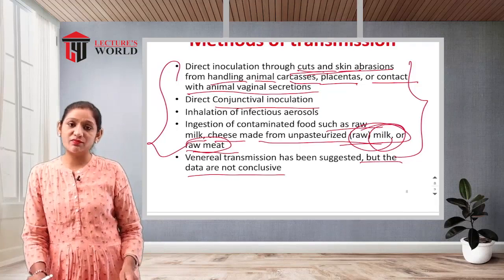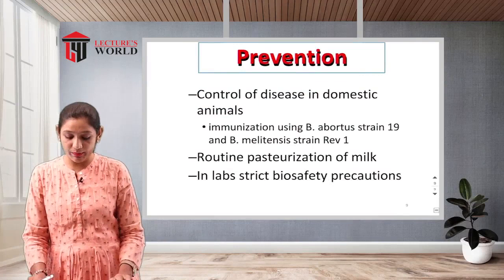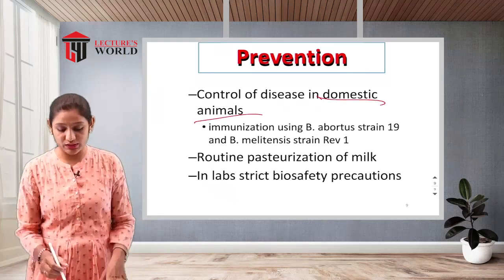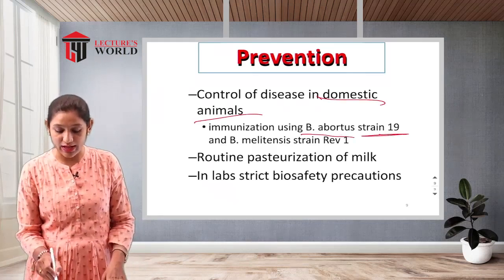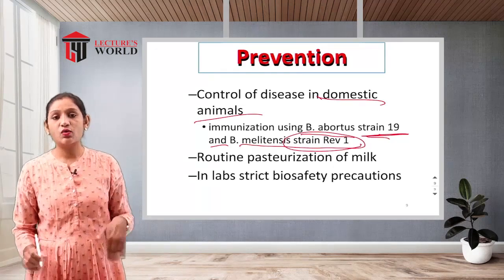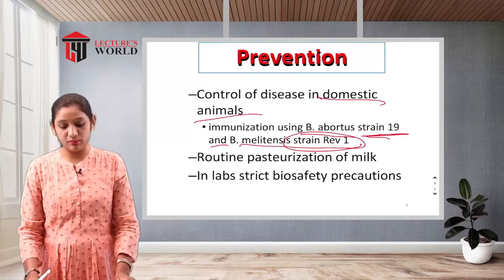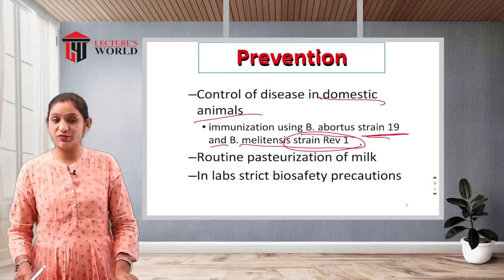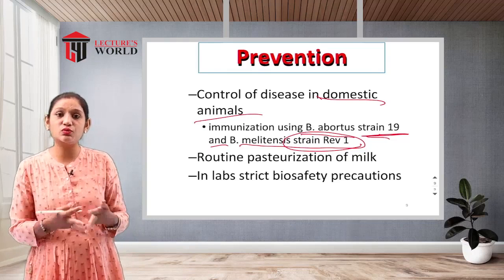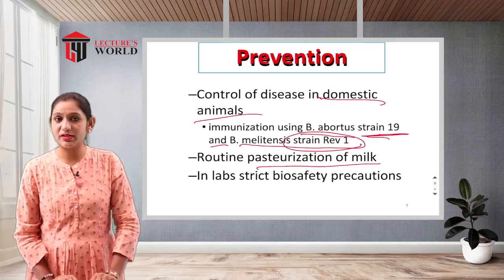Prevention and control of Brucellosis in domestic animals includes immunization using B. abortus strain 19 and B. melitensis strain Rev1. These strains are given as vaccines to animals to control the infection and reduce transmission to humans.